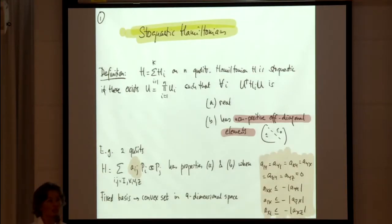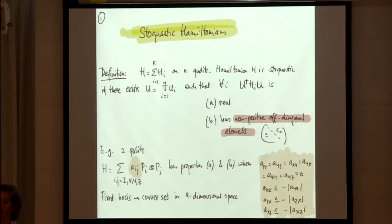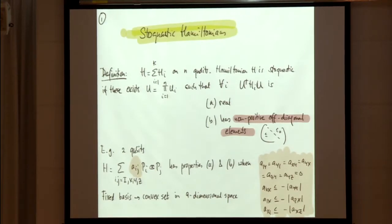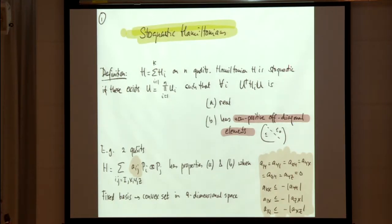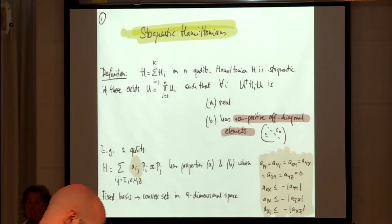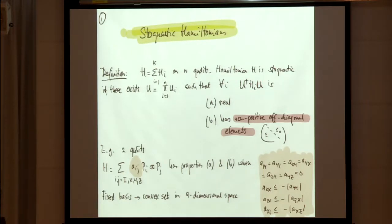Stoquastic Hamiltonians — I'll give you one definition, but I'd also like to point out that it's a definition you can choose to relax. I have a Hamiltonian on N qudits with a bunch of terms. I say that Hamiltonian is stoquastic if there exists a unitary which is a product unitary — one unitary on every qudit — such that if I rotate the Hamiltonian, the Hamiltonian is real, and each term has non-positive off-diagonal elements.